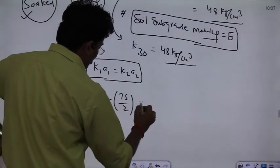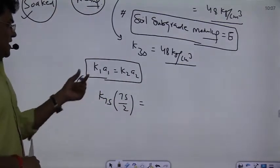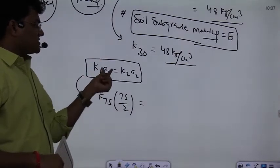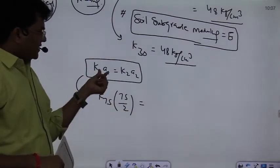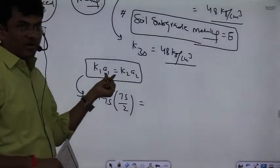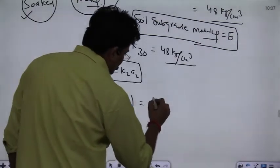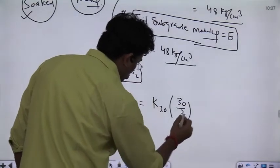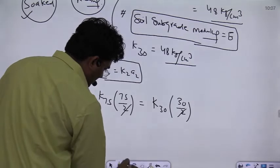75 by 2 for radius. In this formula, whether we talk about the radius or diameter, it will be the same. So this is k multiplied by 30 by 2. So 2 cancels out.